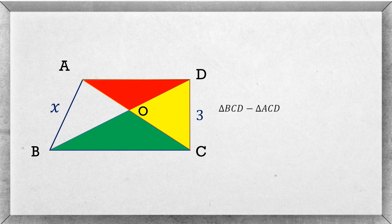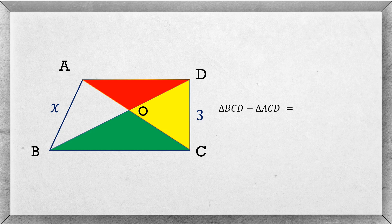Now subtract the area of triangle ACD from BCD. Since BCD equals BOC plus COD, and ACD equals AOD plus COD, and COD is common for both, COD will cancel out. Therefore BCD minus ACD equals BOC minus AOD.